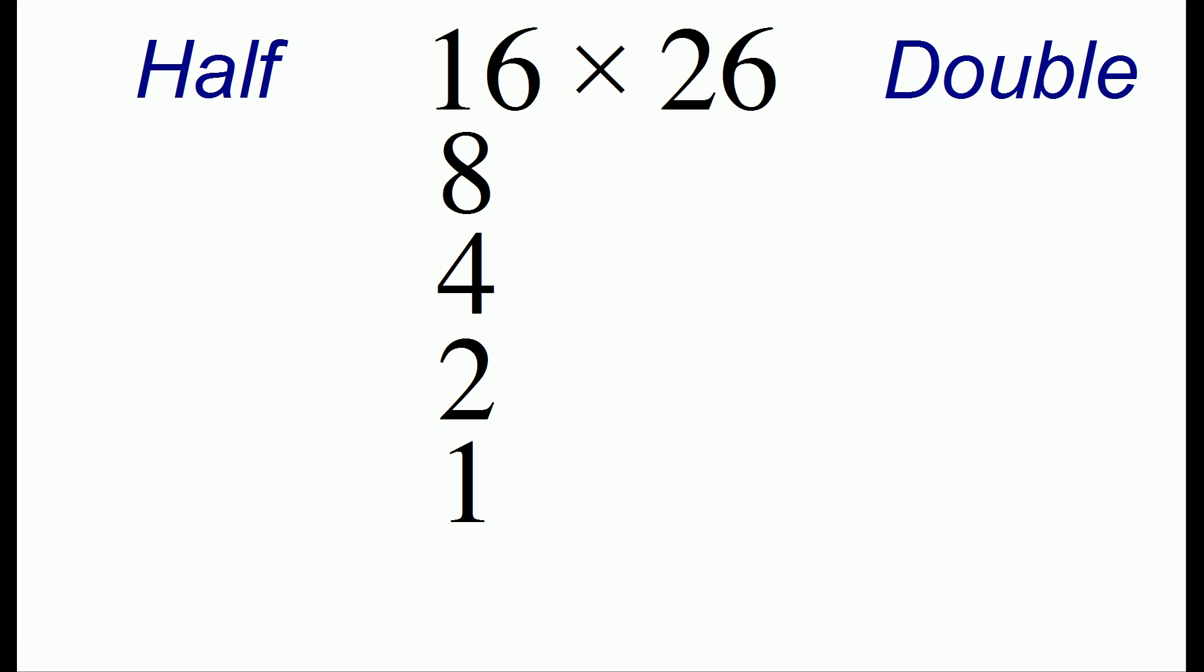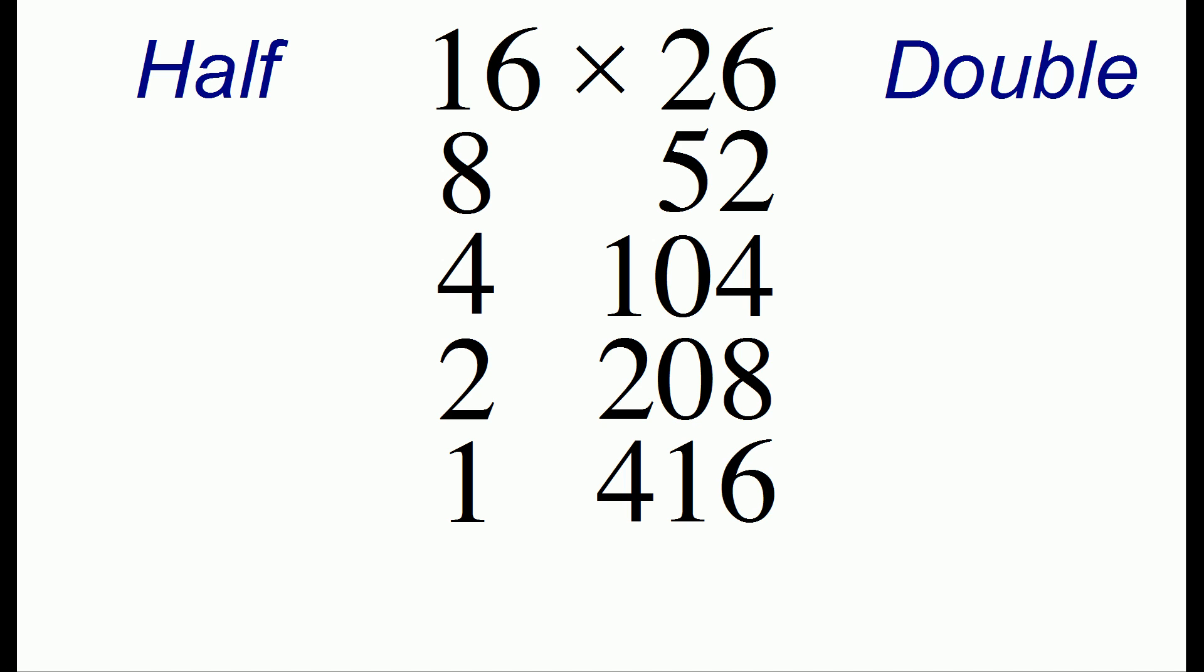We take the number on the right, and we repeatedly double it. So from 26 we get 52, 104, 208, and 416.